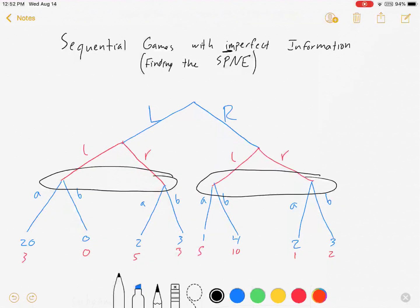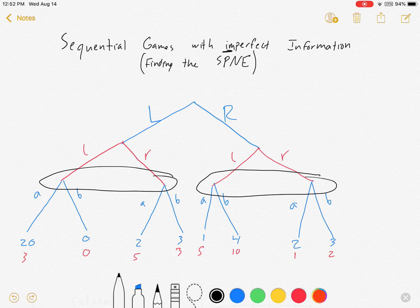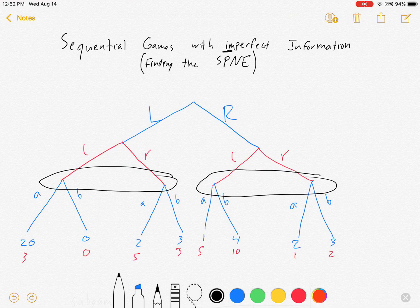And so if the player has no idea where they're at, they have to act as if there's no information. It basically makes it so it's not even a sequential game anymore.